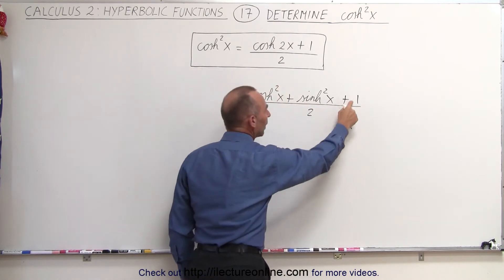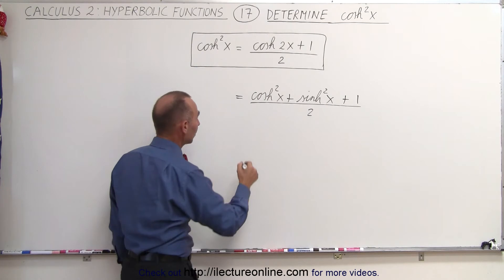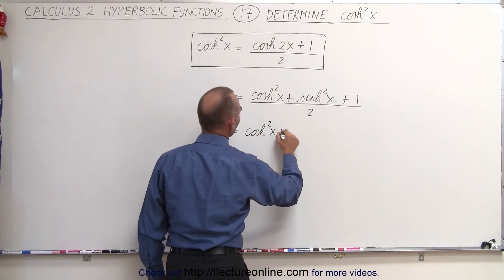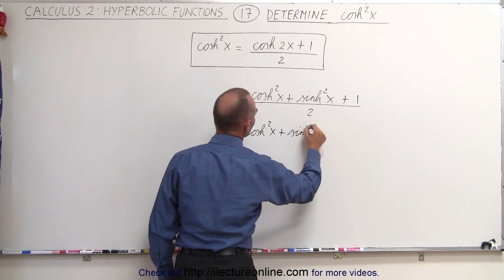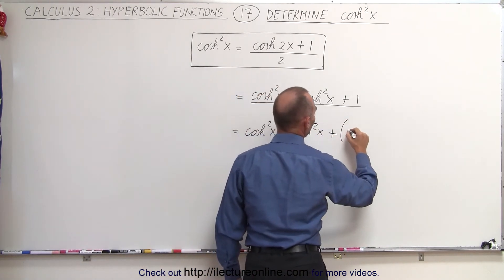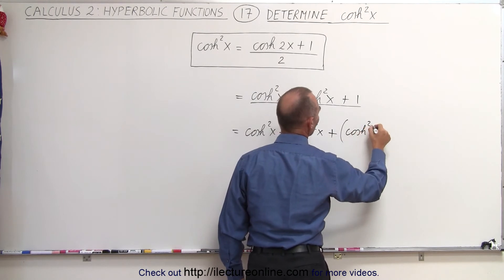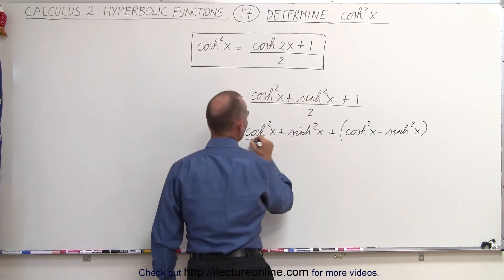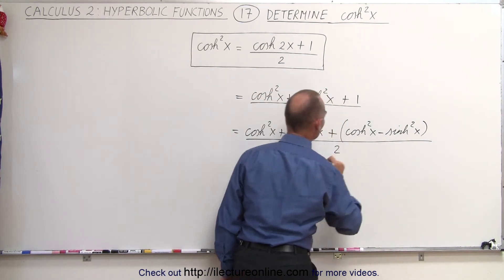Now we're going to take the 1 and rewrite that as follows. This can be written as the hyperbolic cosine squared of x plus the hyperbolic sine squared of x, plus this can now be replaced by the hyperbolic cosine squared of x minus the hyperbolic sine squared of x. The whole thing here is still divided by 2.